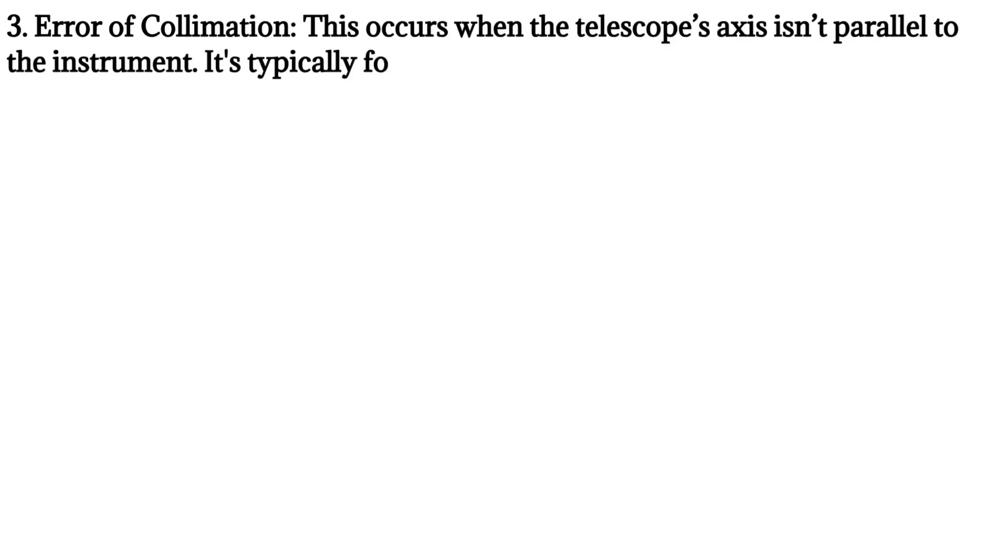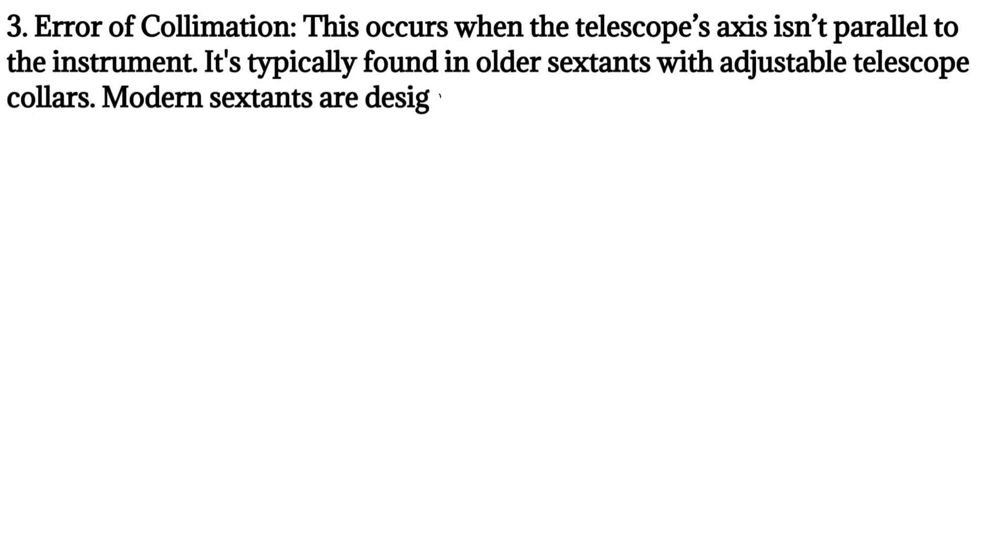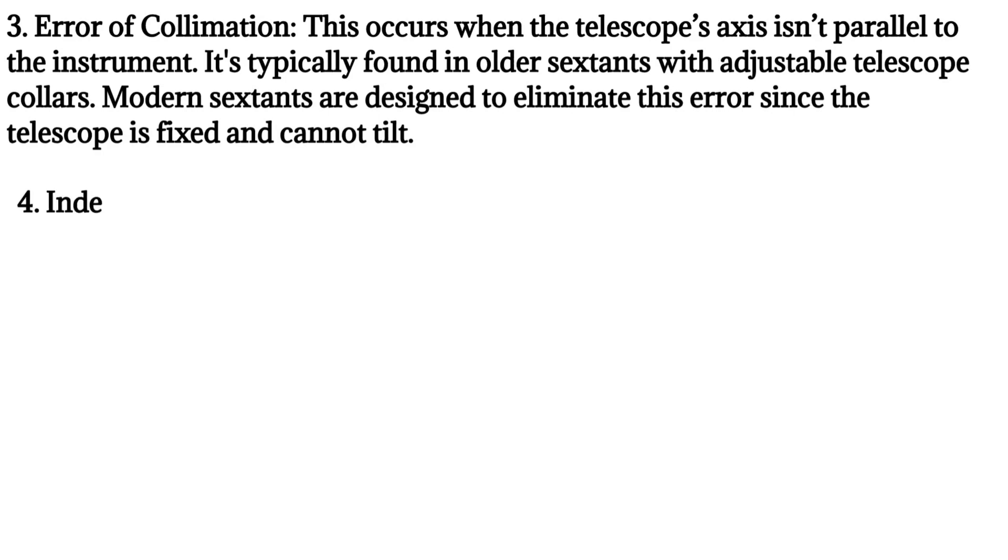Third, error of collimation. This occurs when the telescope's axis isn't parallel to the instrument. It's typically found in older sextants with adjustable telescope collars. Modern sextants are designed to eliminate this error since the telescope is fixed and cannot tilt.